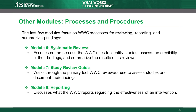The last few modules focus on WWC processes for reviewing, reporting, and summarizing findings. Module 6 focuses on the systematic review process, which is the process the WWC uses to identify studies, assess the credibility of their findings, and summarize the results of our reviews. Module 7 walks through the study review guide, which is the primary tool WWC reviewers use to assess studies and document their findings.